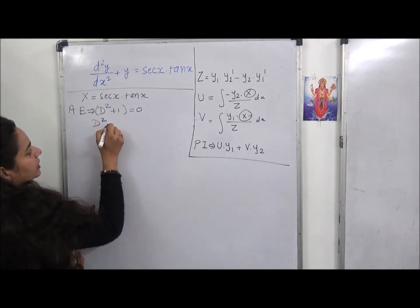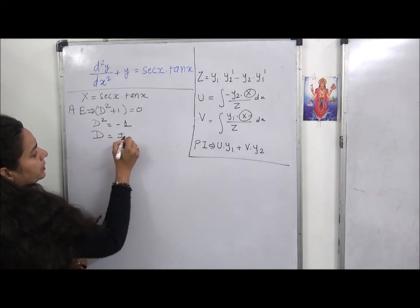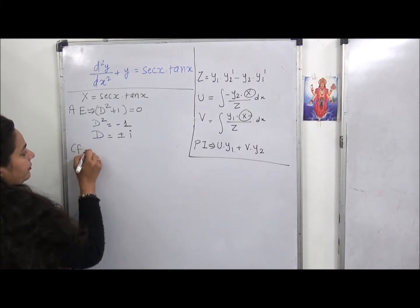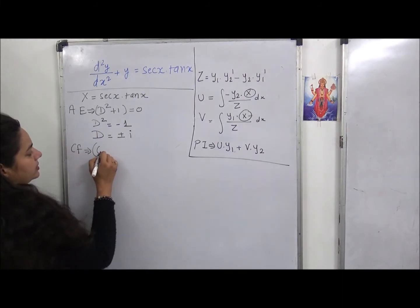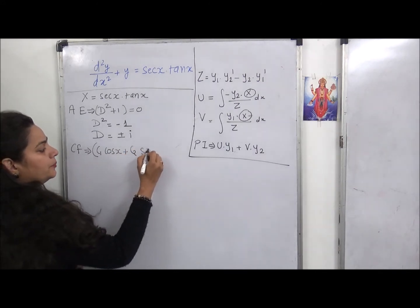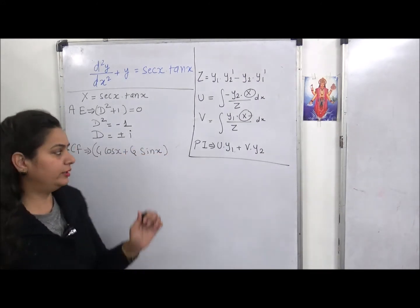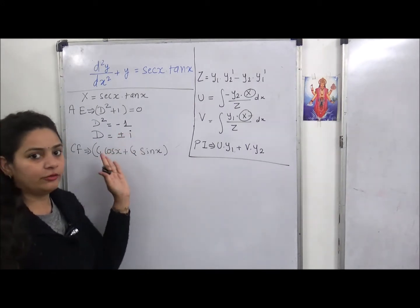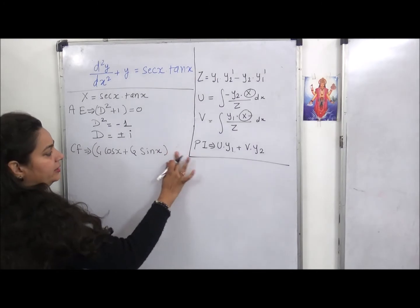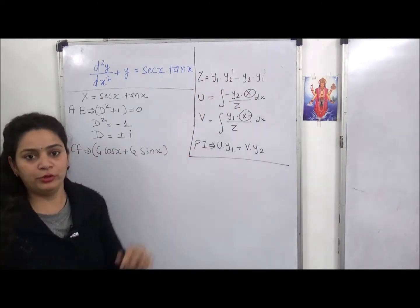From D² + 1 = 0, we get D² = −1, so D = ±i. The complementary function (CF) will be c1·cos x + c2·sin x. Since the roots are purely imaginary with no real part, there is no exponential term in the CF.